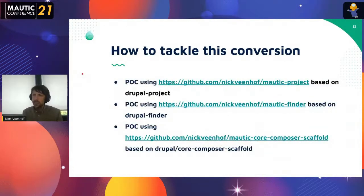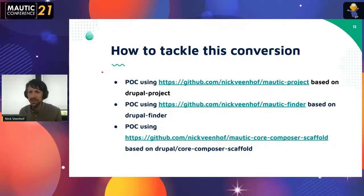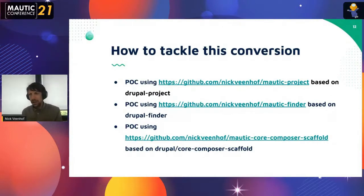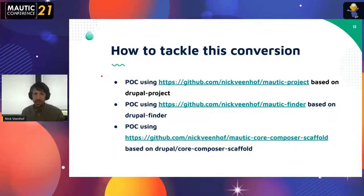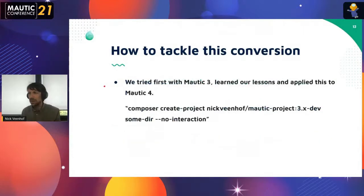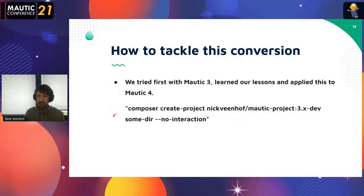We had several calls just to decide on naming things, because naming things is complicated. All of this was proof of concept on GitHub — there was a mautic-project, mautic-finder, mautic-core, composer-scaffold — all small projects necessary for the whole structure to work. We tried it with Mautic 3, learned our lessons, and applied this to Mautic 4. With Mautic 3, it's possible but not ideal — it doesn't allow custom plugins to really live there and does a lot of hackery.